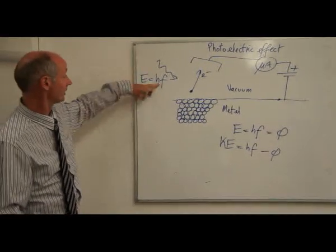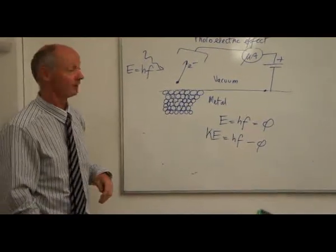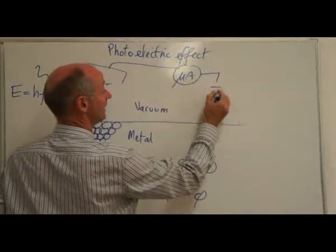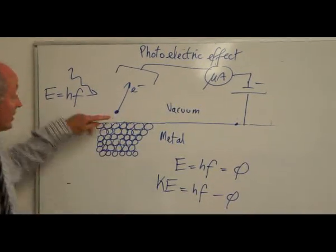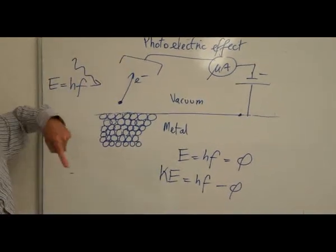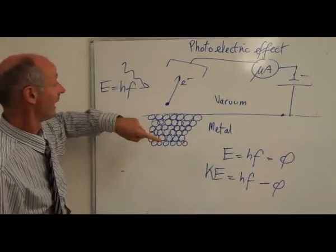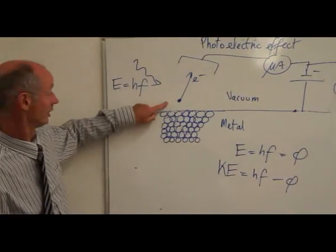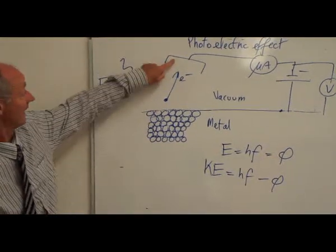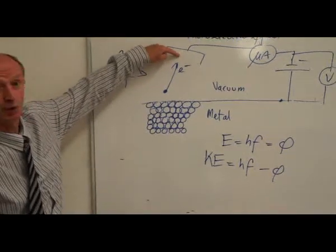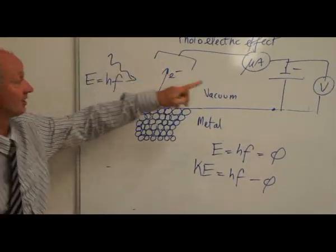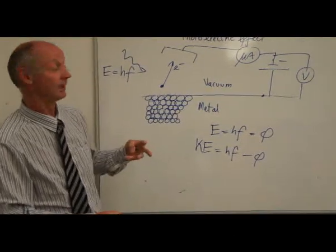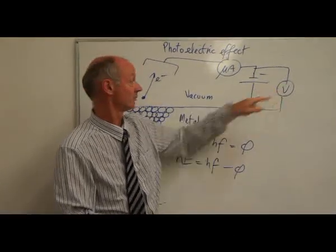As we increase the frequency, electrons have more kinetic energy, and there's a neat trick for finding that out. We reverse this voltage so that we put a negative voltage on there, which tends to prevent the electrons from arriving at the collector. We measure the voltage at which the electrons stop arriving — that tells us the kinetic energy of the electrons, because they haven't got enough kinetic energy to beat this voltage. That allows us to measure the kinetic energy directly in terms of electron volts.